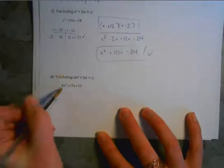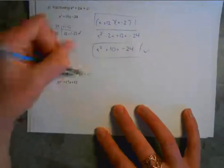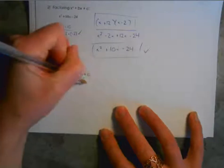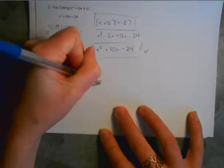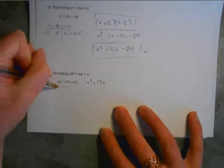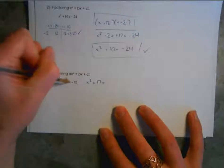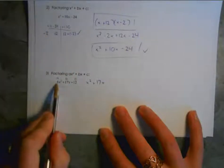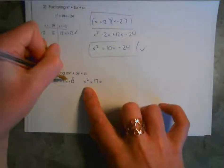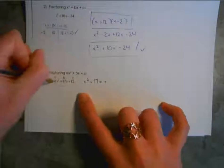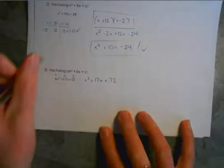What we do initially is swing the 6 over to the 12 — meaning we take the 6 and multiply it by 12. So the x squared stays as x squared, the 17x middle term never changes, and we're doing 6 times the last term. If this is a, this is b, and this is c, basically we're multiplying a by c. So x squared plus 17x plus 6 times 12, which is 72.